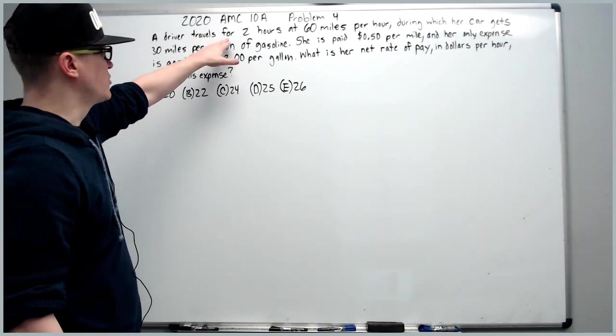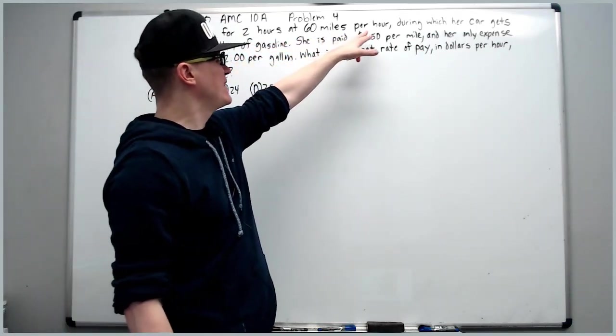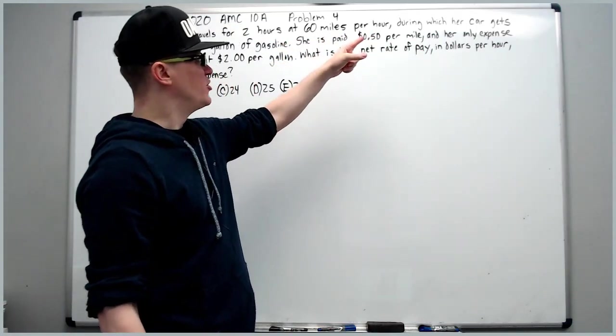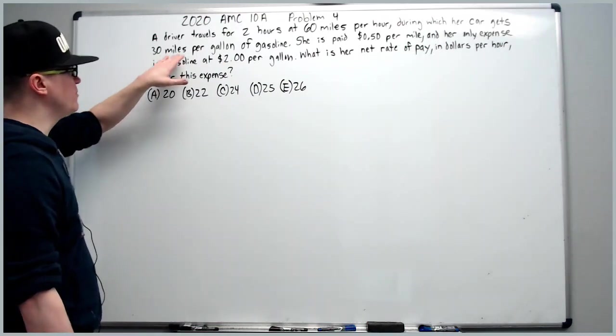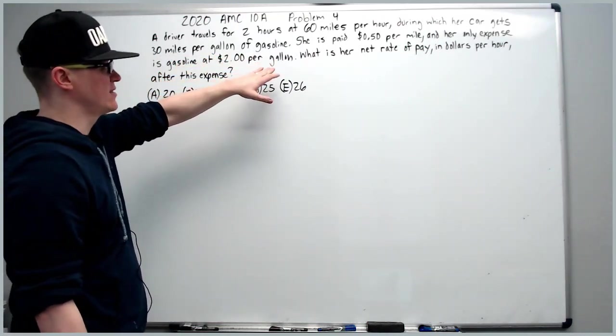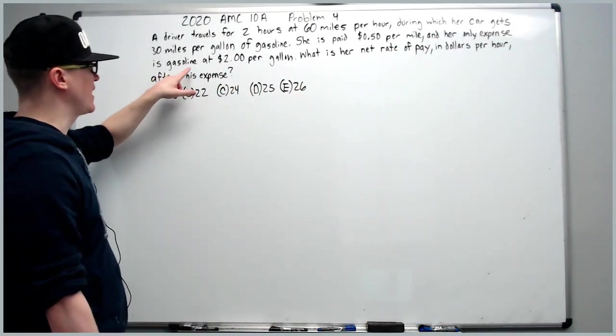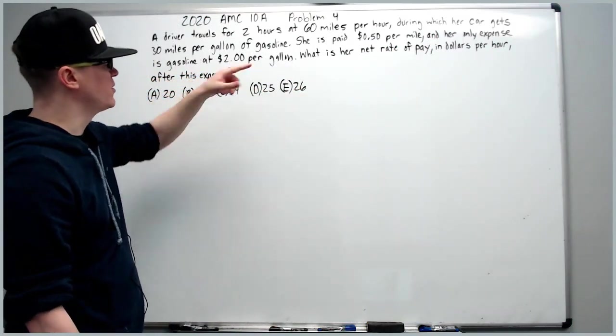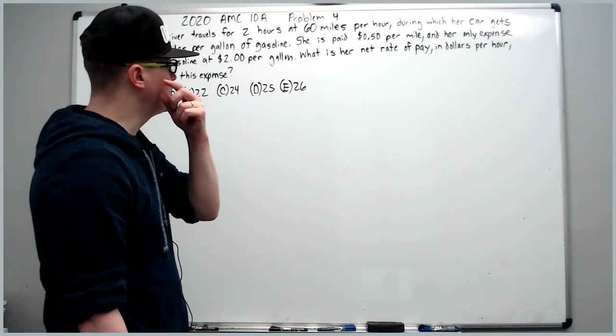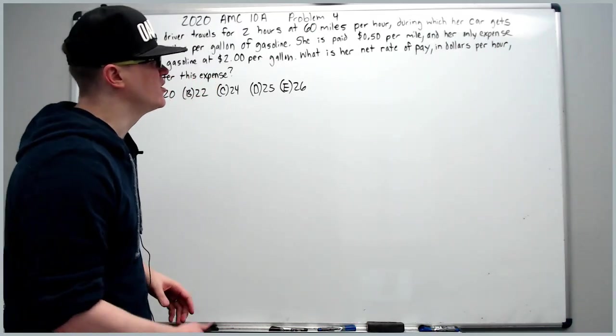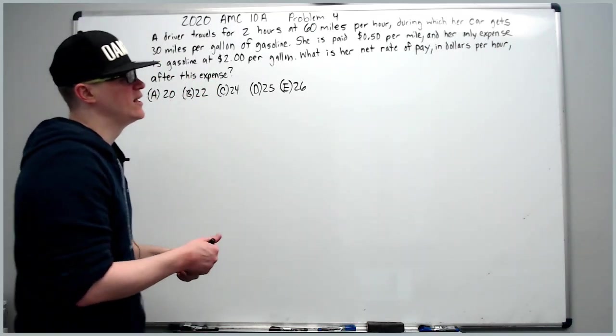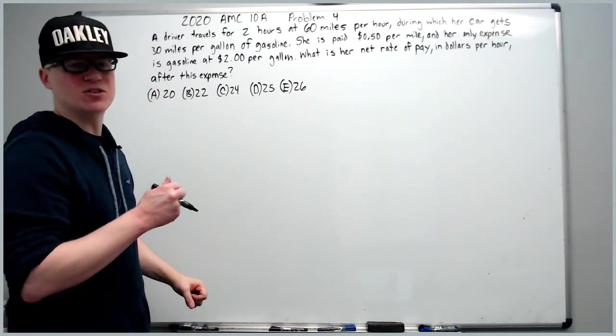Now on the 2020 10A problem number 4, a driver travels for 2 hours at 60 miles per hour, during which her car gets 30 miles per gallon of gas. She is paid 50 cents per mile, and her only expense is gasoline at $2 per gallon. What is her net rate of pay in dollars per hour after this expense?